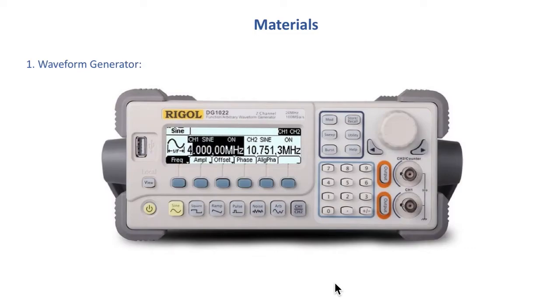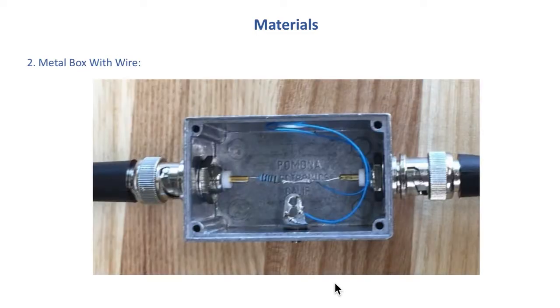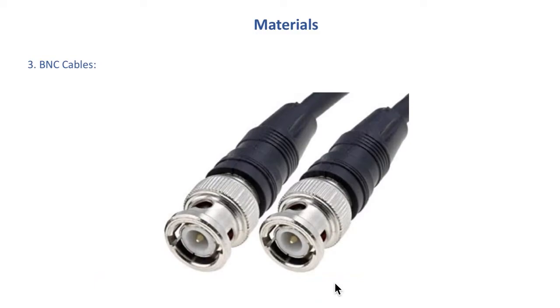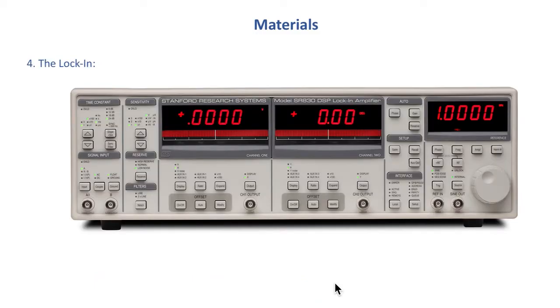So the materials that you're going to need: first the waveform generator, the metal box with the wire that we have in the lab, a couple BNC cables, and of course the lock-in.